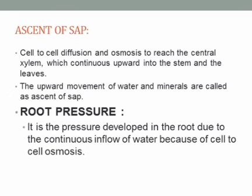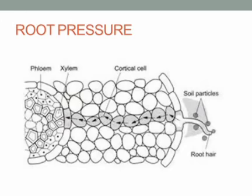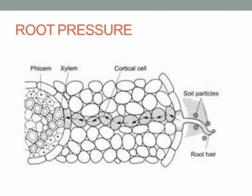As a result of root pressure, water enters the xylem vessels and helps in pushing the plant sap upwards. Thus, root pressure is one of the forces that contributes to the ascent of sap through the stem into the leaves, up to a certain height. The diagram shows the xylem, phloem vessels, and how water absorbed by the root hair is transported to other parts of the plant — overall representing the movement of water along with minerals in a plant.